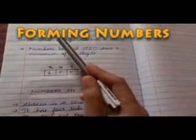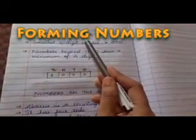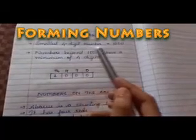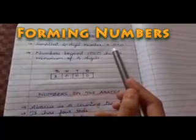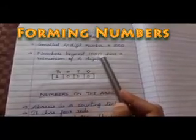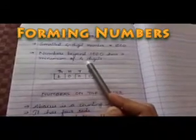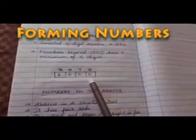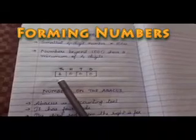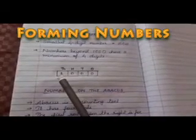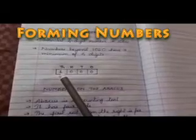Next is forming numbers. As we have discussed, the smallest four digit number is 1000, and the numbers beyond 1000 should have a minimum of four digits. That is, to write a four digit number we should add one more place to the left of hundreds. That is the thousands place.